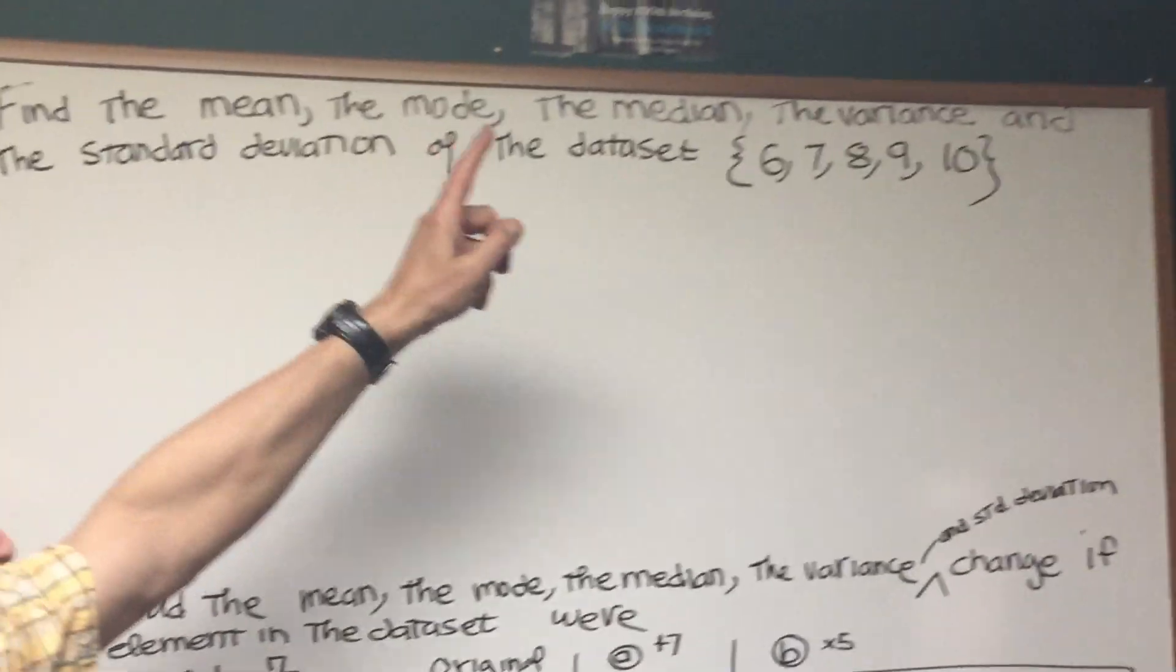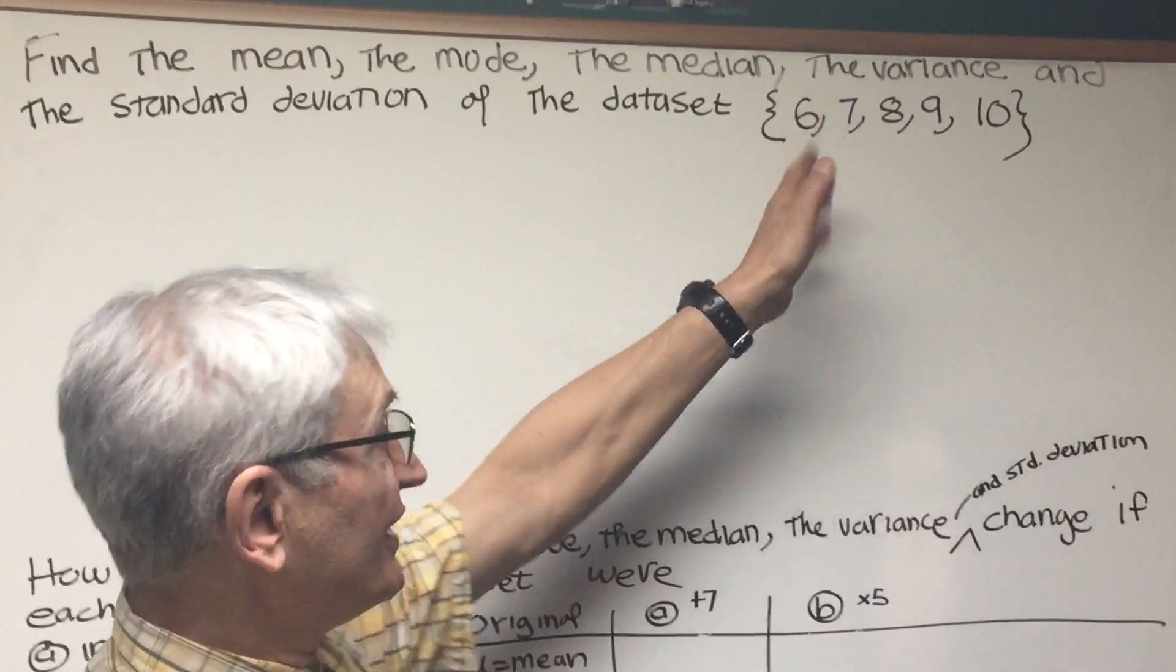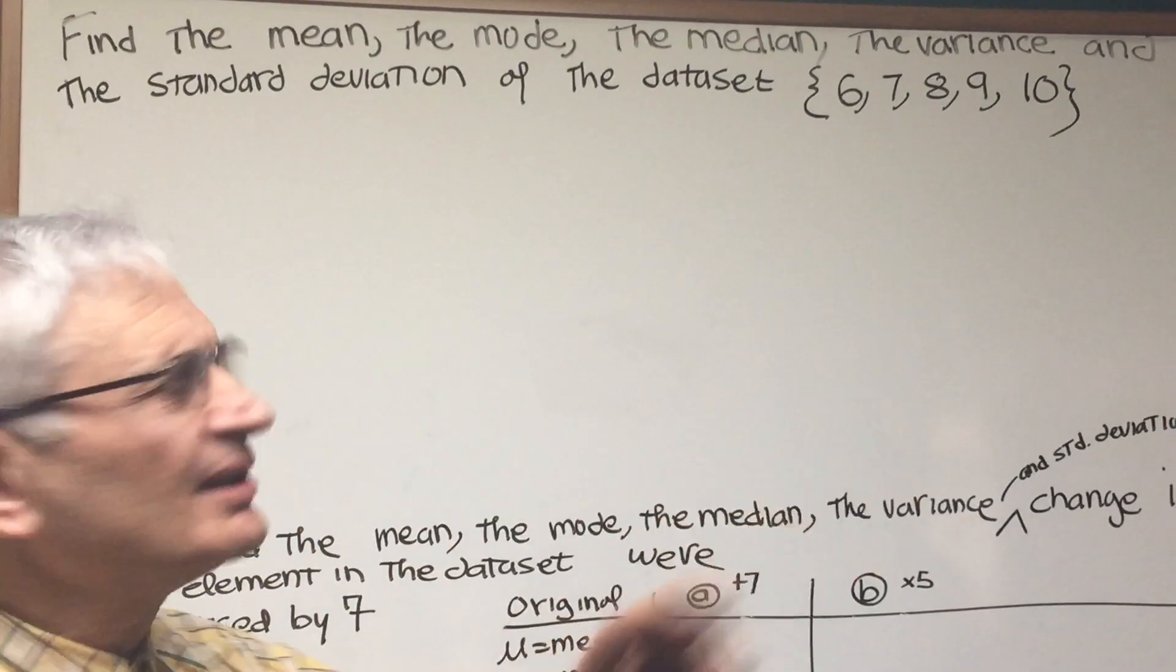Let's read the problem together. Find the mean, the mode, the median, the variance, and the standard deviation of this given data set: 6, 7, 8, 9, 10. All right, let's begin.